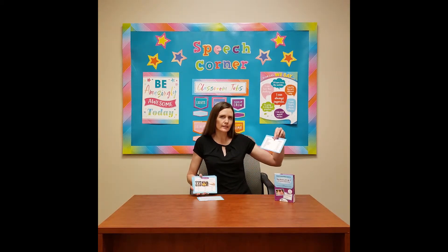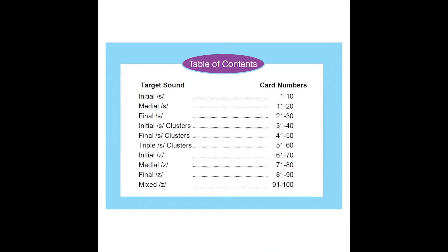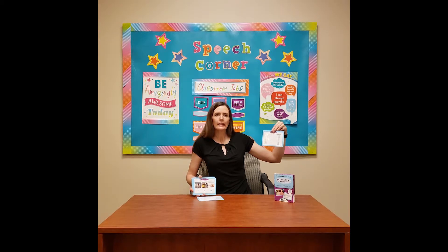When you open it up, you'll get a table of contents card. This particular deck targets initial S, medial S, final S, initial S clusters, final S clusters, and triple S clusters. It also targets initial Z, medial Z, final Z, and mixed Z. You're basically getting 10 cards per section.